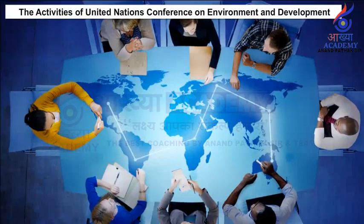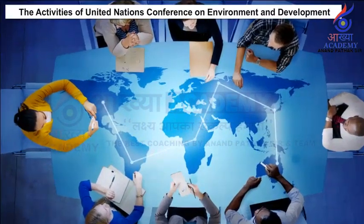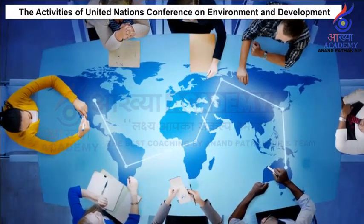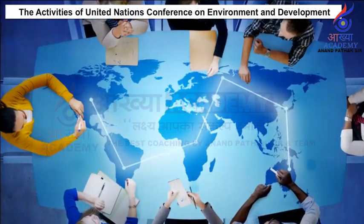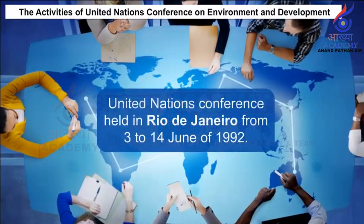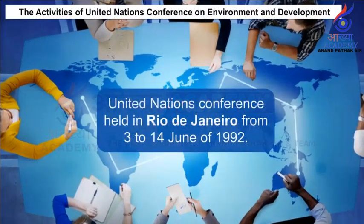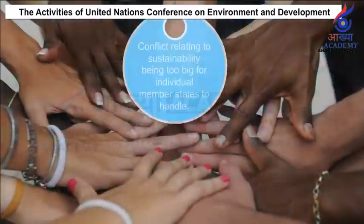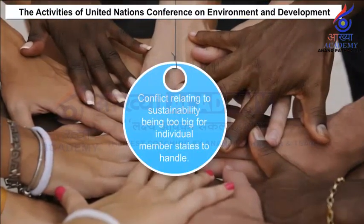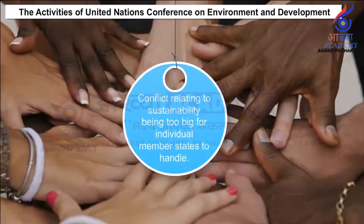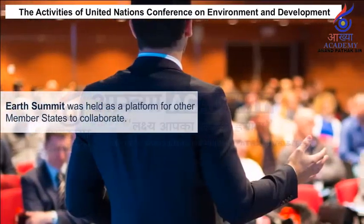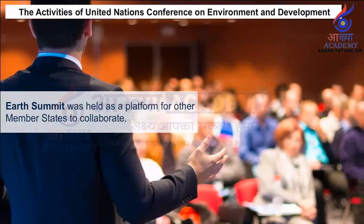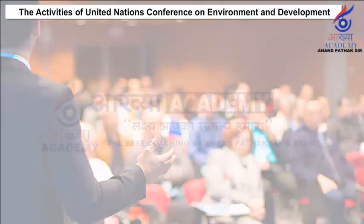The Activities of the United Nations Conference on Environment and Development. The United Nations Conference on Environment and Development (UNCED) was a major United Nations conference held in Rio de Janeiro from 3rd to 14th June 1992. Due to conflicts relating to sustainability being too large for individual member states to handle, the Earth Summit was held as a platform for member states to collaborate.